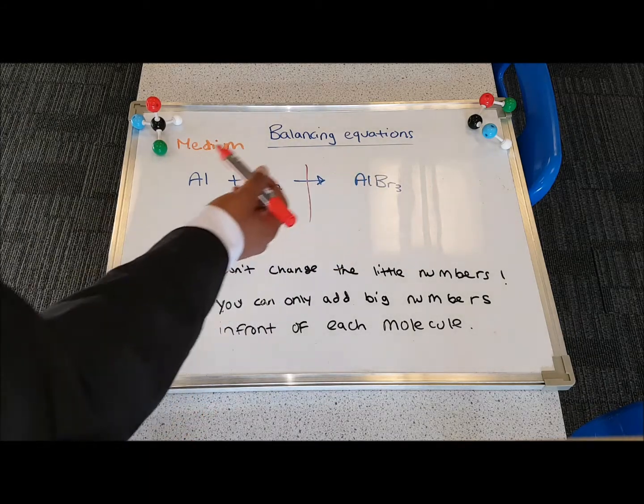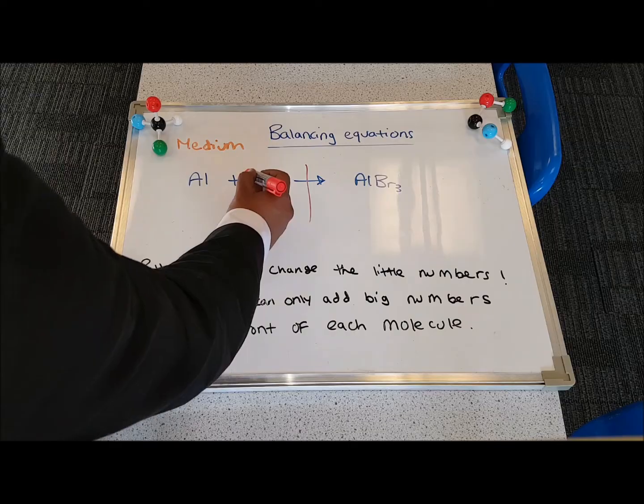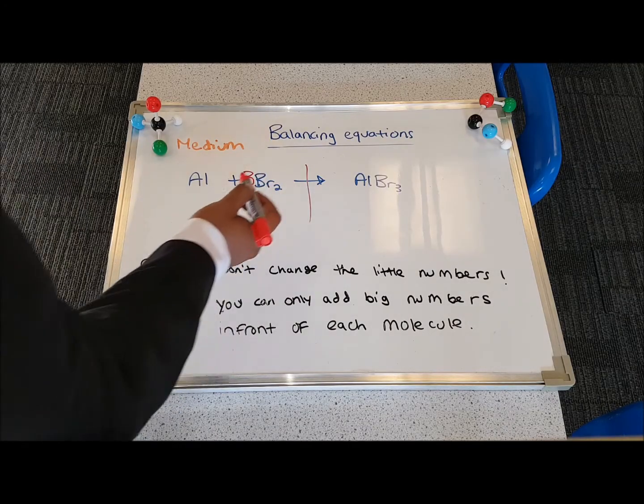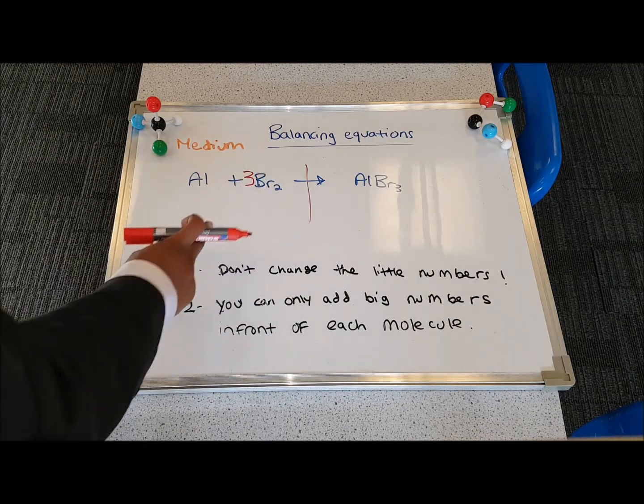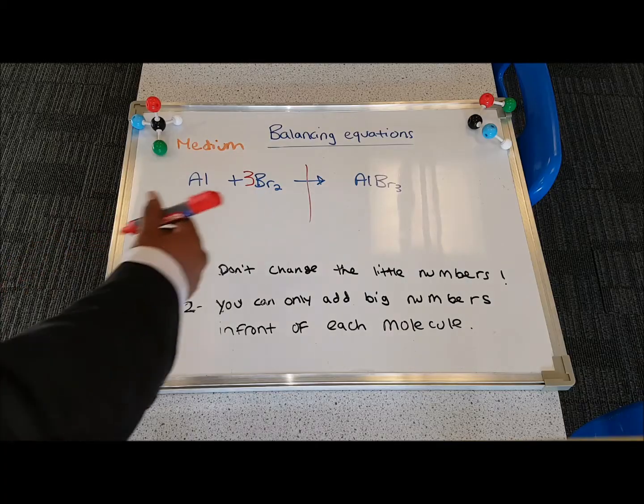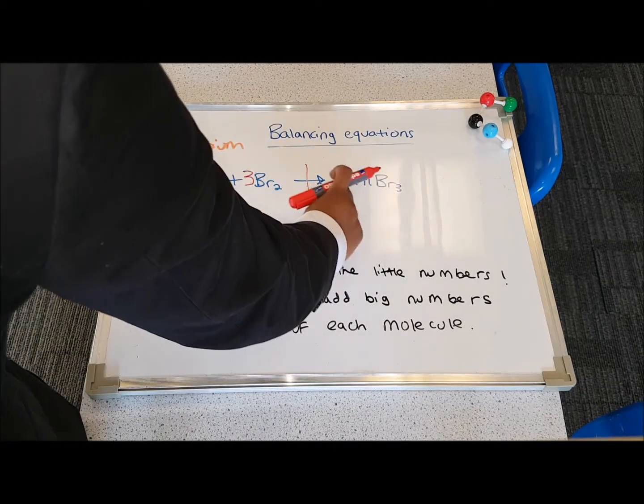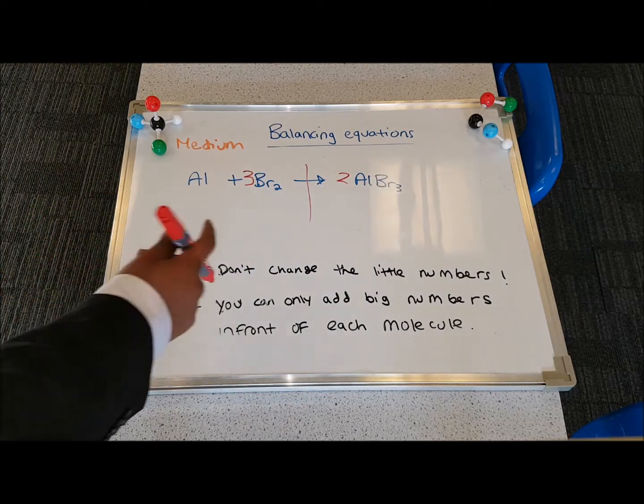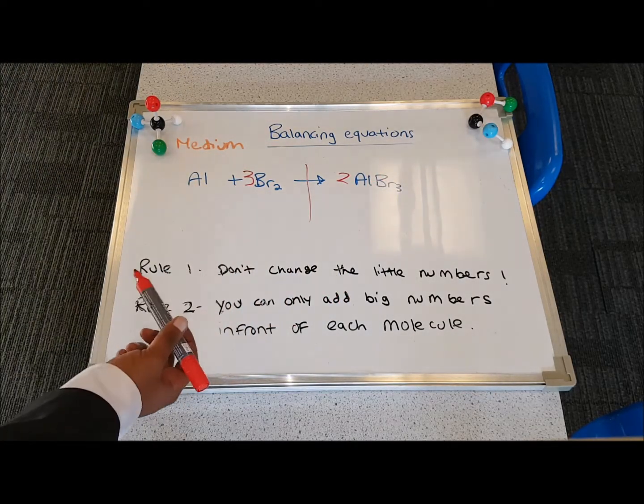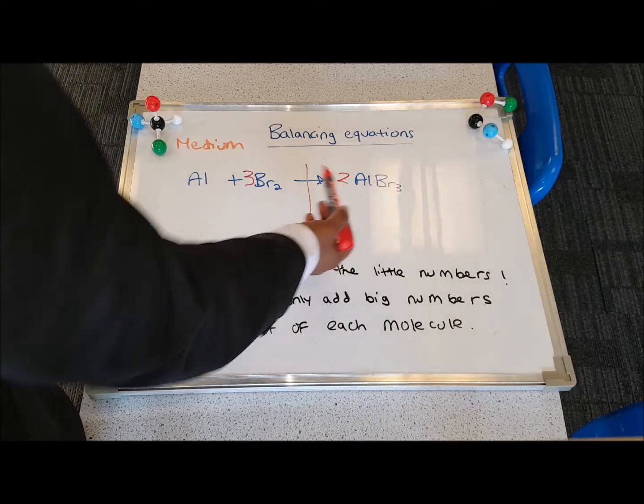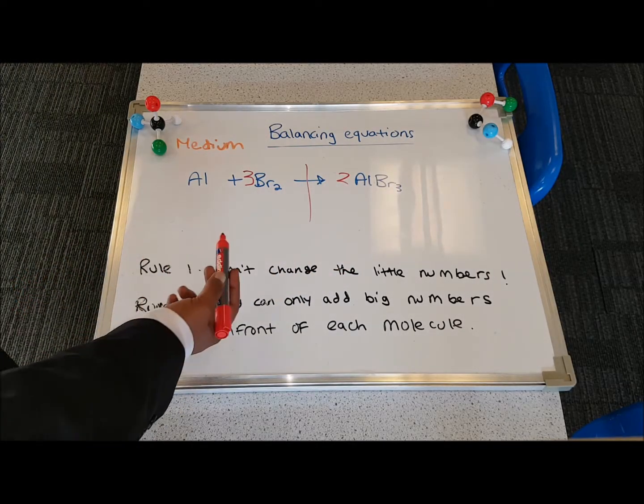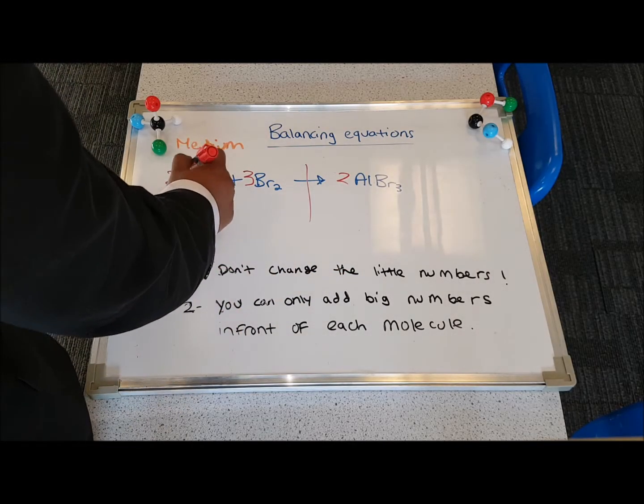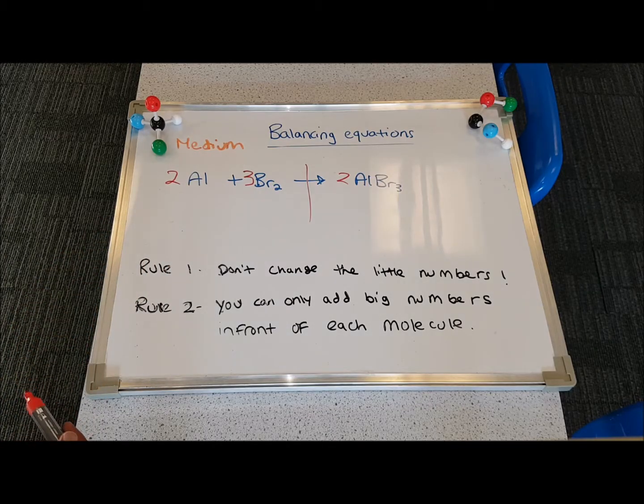I need to get both of these up to 6. So that means I do a 3 over here, so 3 times 2, there's 6 Brs. And I put a 2 in front of this, because 2 times 3 is 6. And now I've got 6 bromines. But once again, this creates a problem, because we now have 2 aluminiums. So we have to make sure we put a 2 in front of this, so that this equation is balanced.